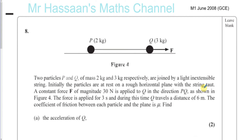Now for question number 8 from M1, June 2008, the GCE paper — the legacy paper from June 2008. This is a question about connected particles moving in a straight line.